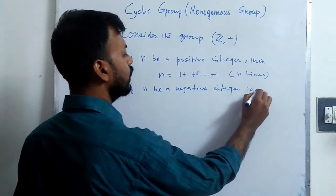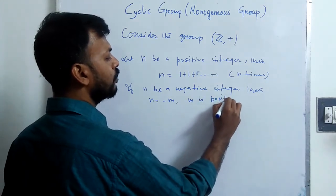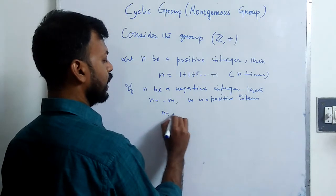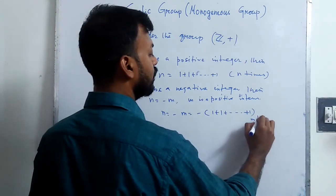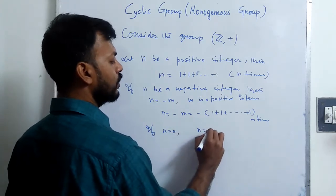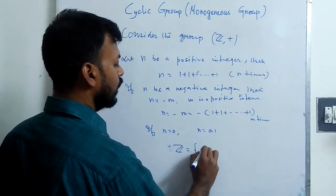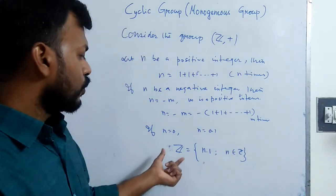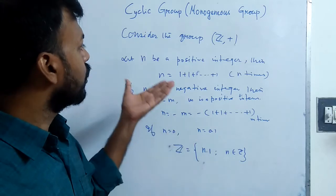If n is a negative integer, then n equals minus m, where m is some positive integer. Then we can write n equal to minus m equal to minus of 1 plus 1 plus 1, m times. And if n equals 0, we can write n equal to 0 times 1. So we can write Z equals n into 1, where n is an integer. So Z is generated by 1, and this is the concept of a cyclic group.